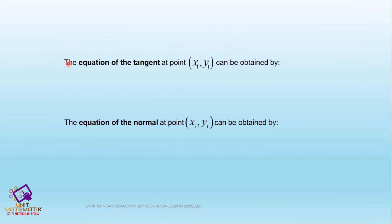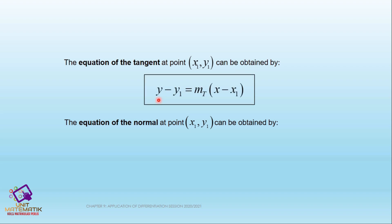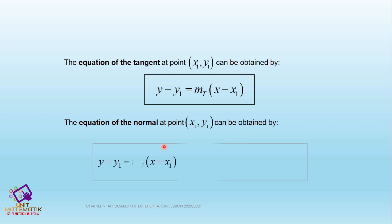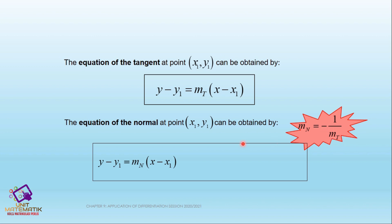As a conclusion, the equation of the tangent at point (x1, y1) is: y - y1 = mt(x - x1). The equation of the normal at point (x1, y1), since mn = -1/mt, can be written as: y - y1 = (-1/mt)(x - x1).